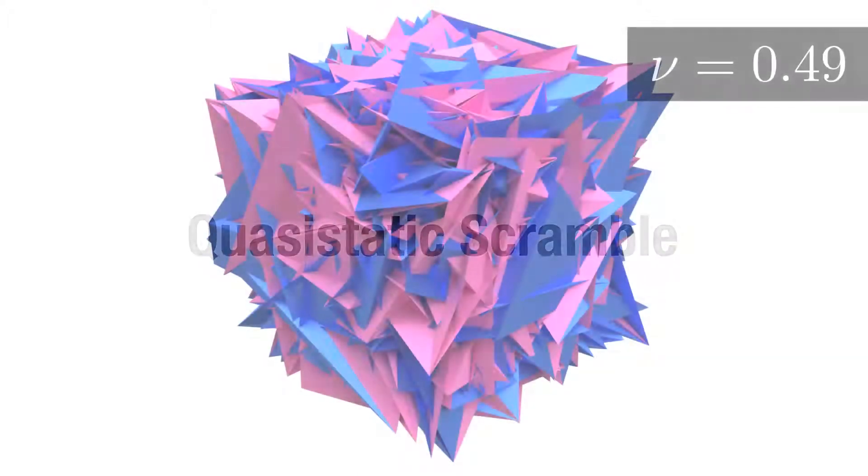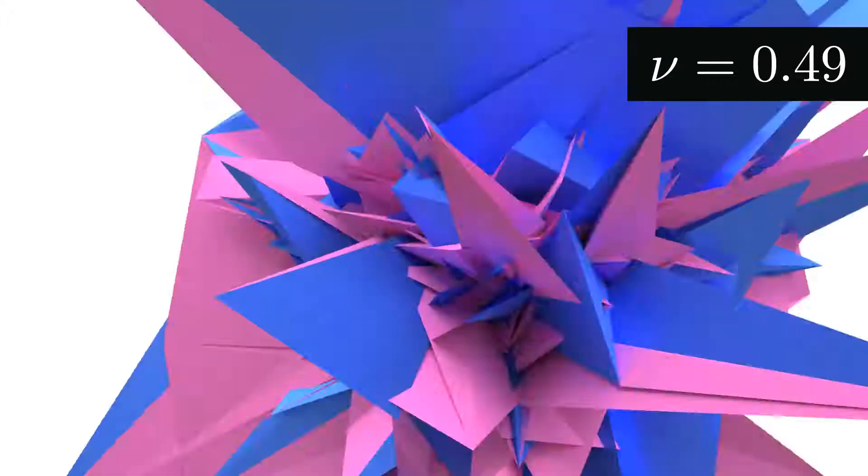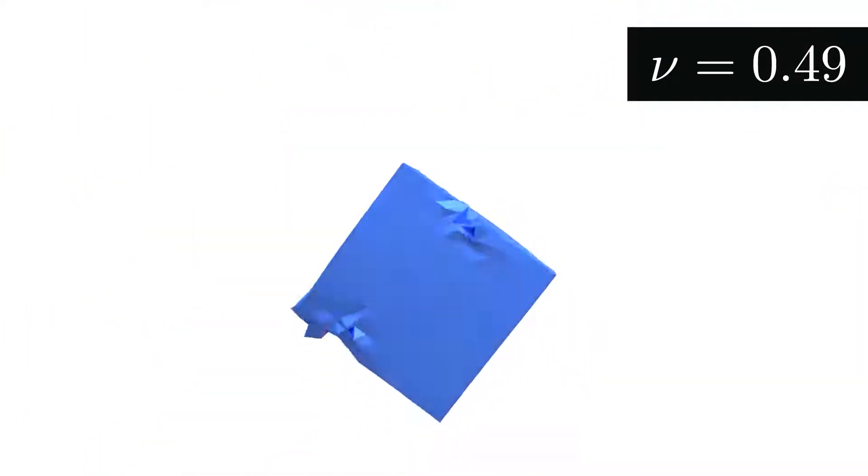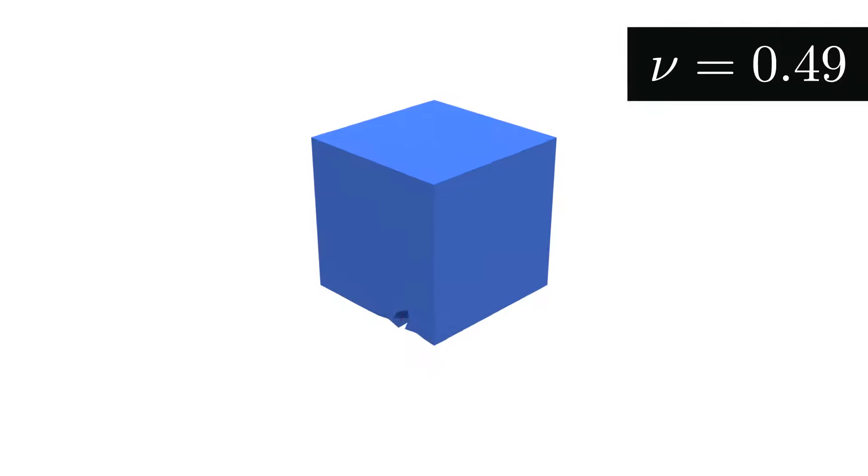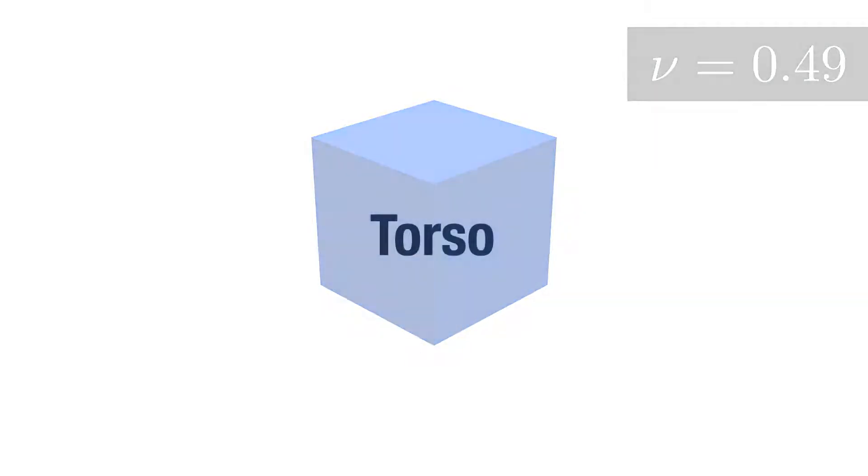Pushing the stress test even further, we randomly scramble the cube's vertices within a space of twice its rest volume. Under these extreme conditions, our model still recovers its rest pose.